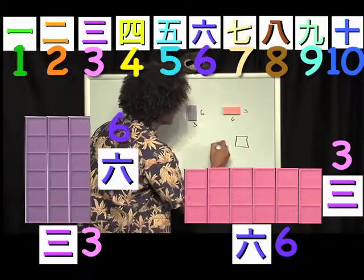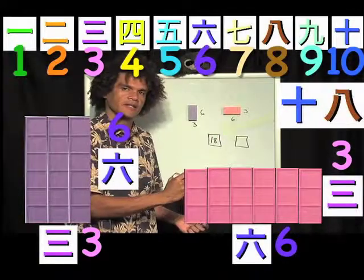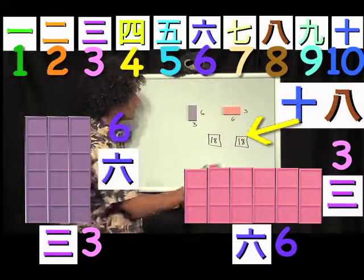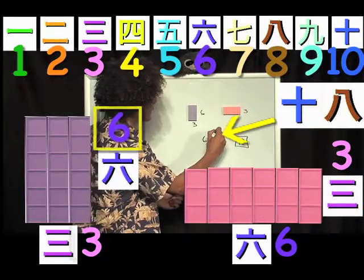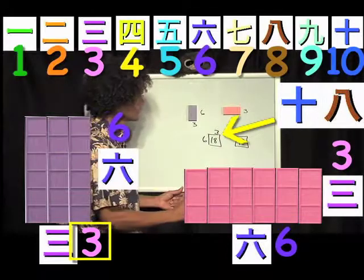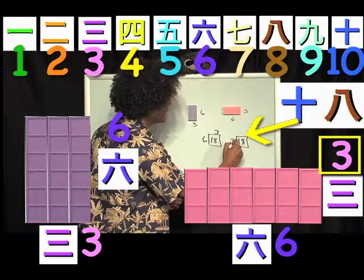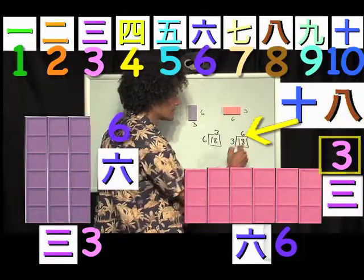Here I have a rectangle, and here I have a rectangle. So the whole rectangle is 18, and on this one we have six is contained in 18 three times. Here, I have three is contained in 18 six times.